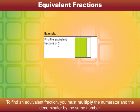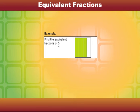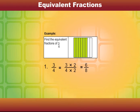For example, to find the equivalent fraction of three by four, multiply the numerator and denominator by two. This is equal to six by eight. Let's multiply the numerator and denominator by three.